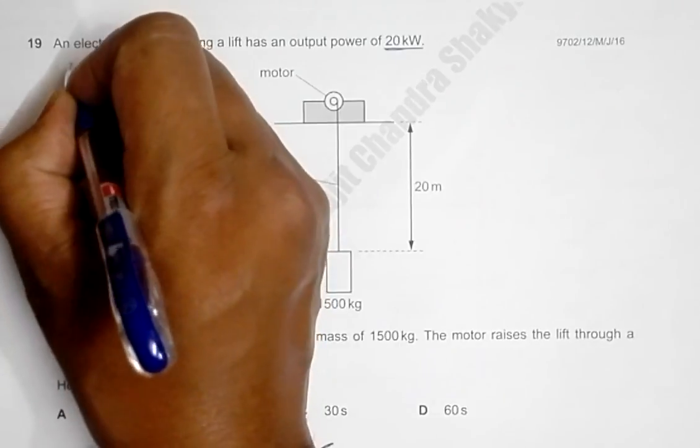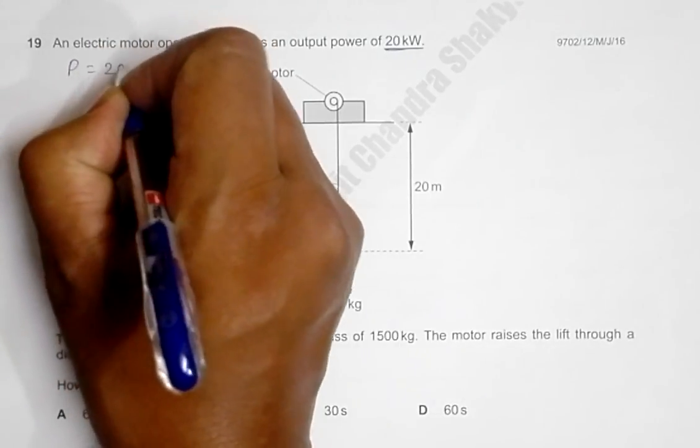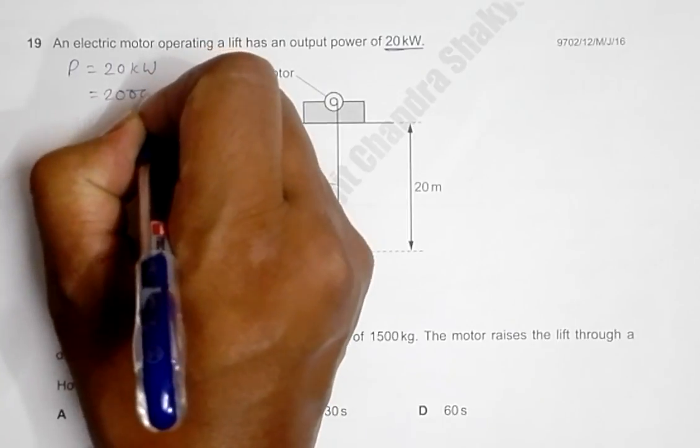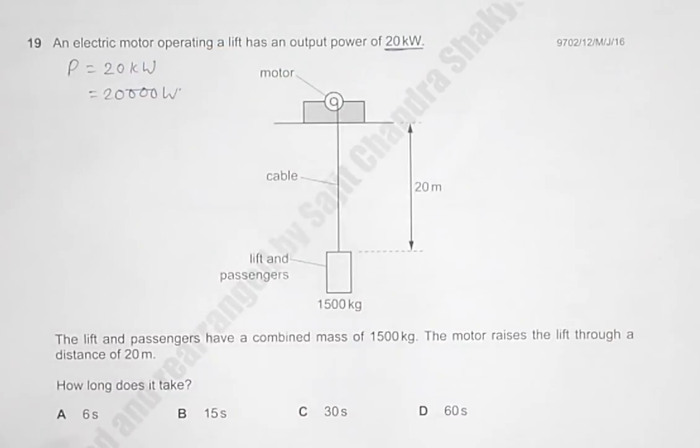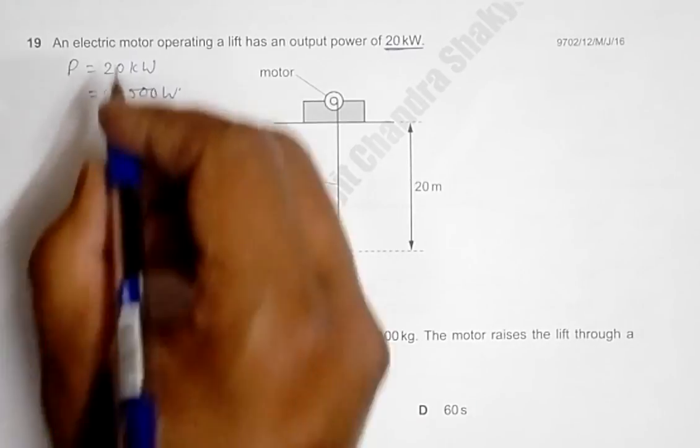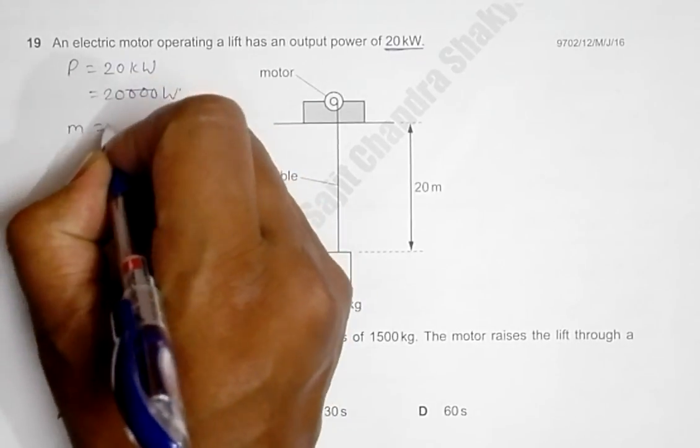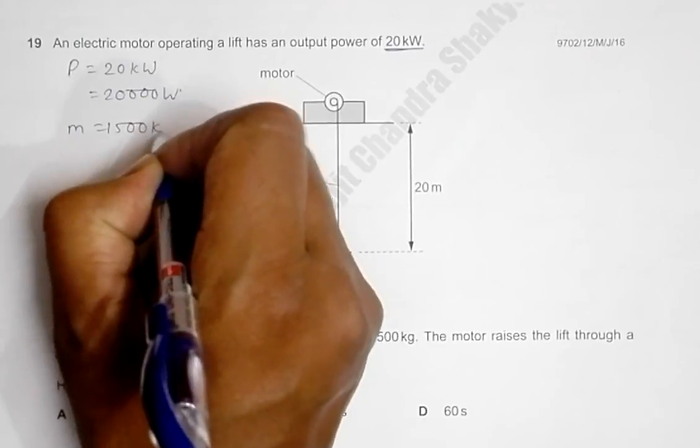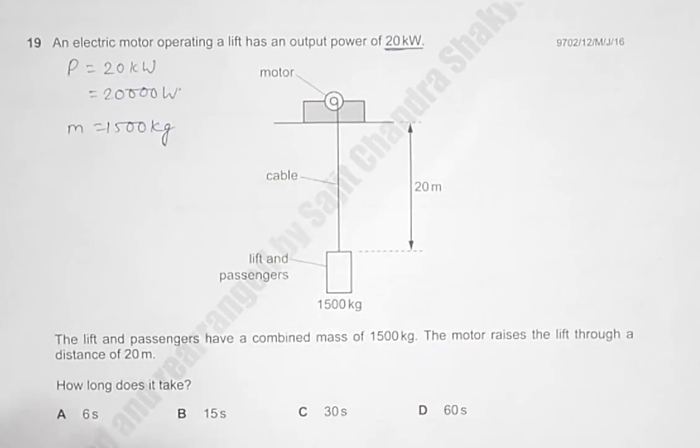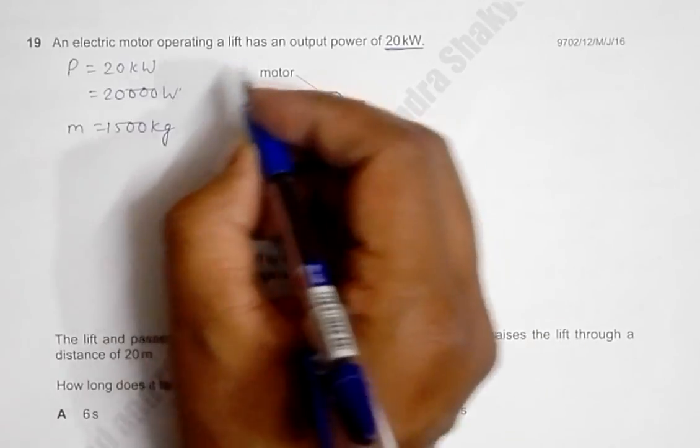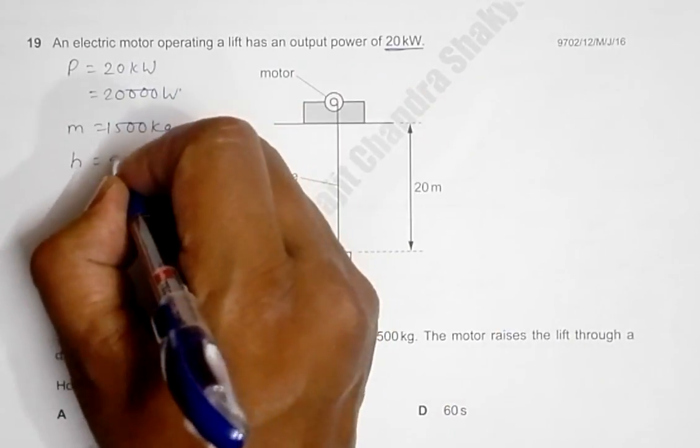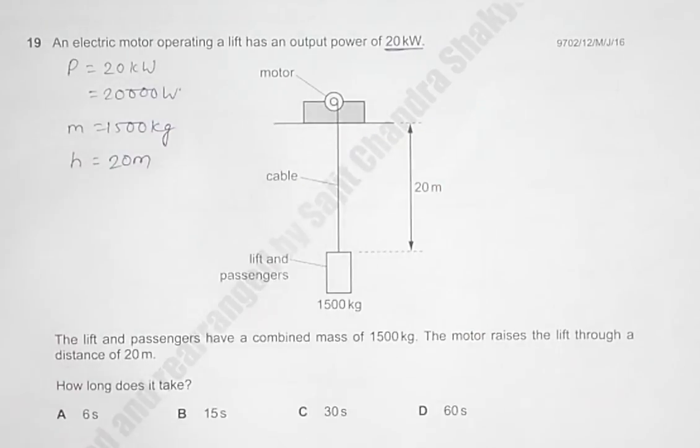So the power of the motor is P = 20 kilowatts = 20,000 watts. The lift and passengers have a combined mass of 1500 kg, so m = 1500 kg. The motor raises the lift through a distance of 20 meters, so I can write h or s as 20 meters. We need to find how long does it take.